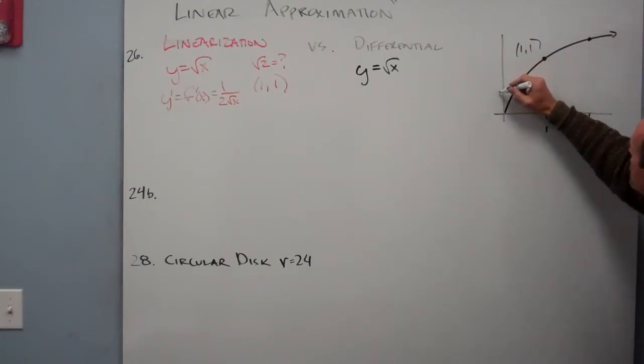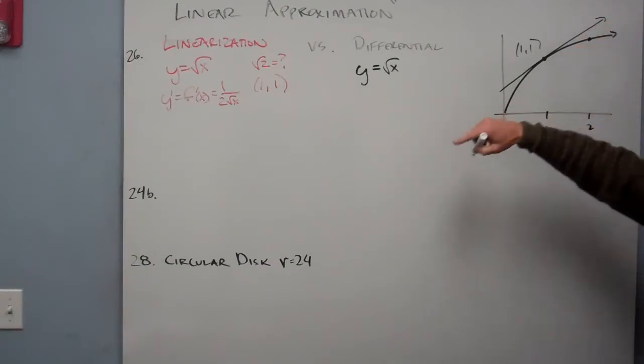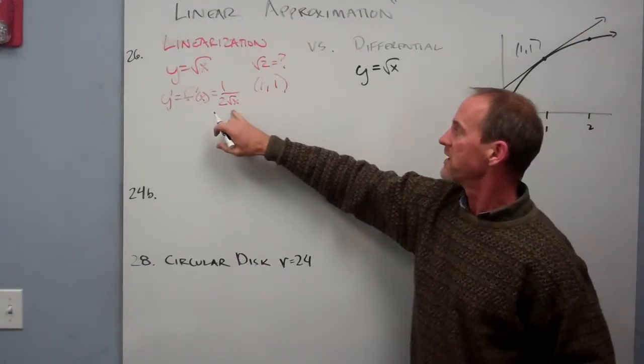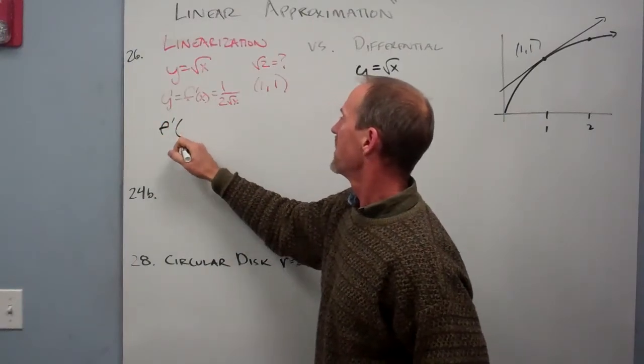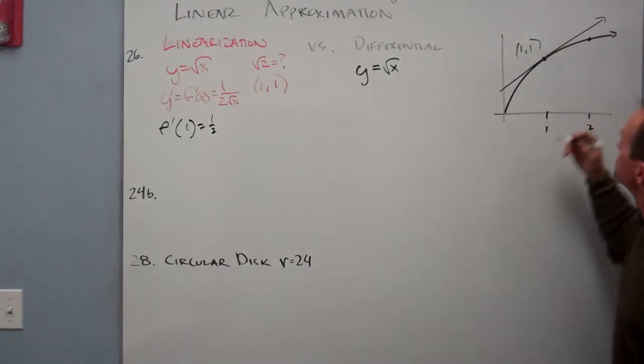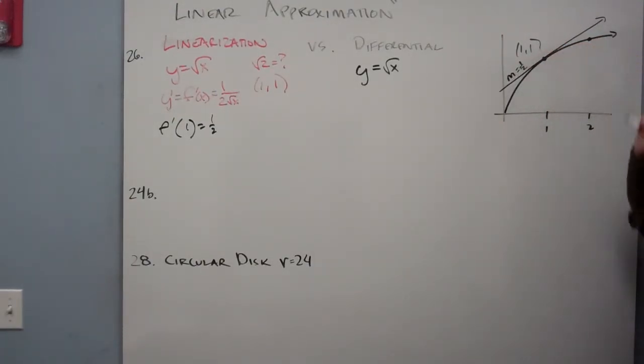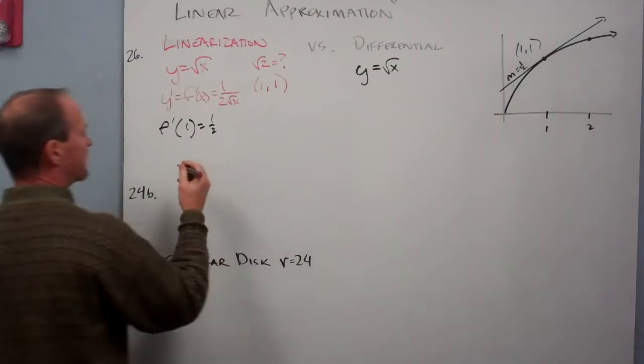But I've got this tangent line that's coming along like this, and I've now found that, well, at 1, when I plug that in, f'(1) is 1 half. So there it is, m, my slope is 1 half. So I have a point (1,1), I have a slope, I can put this into point-slope form, and then modify it.